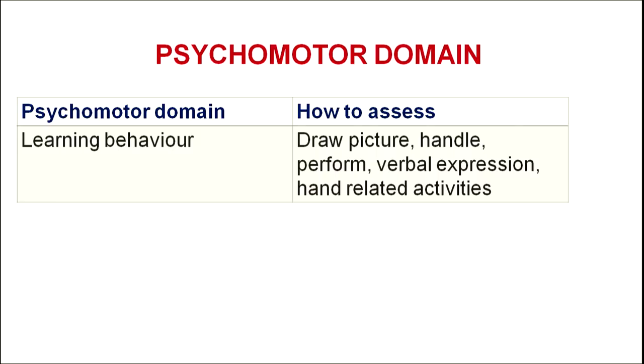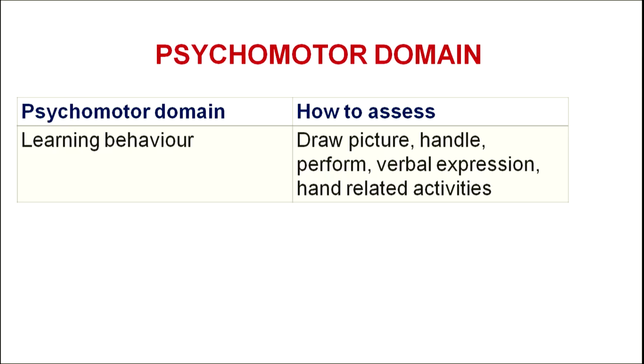The third level of learning objectives is the psychomotor domain, which involves manipulative activities like drawing pictures, handling and manipulating activities through experiments, verbal expression, and hand-related activities. These are parameters through which psychomotor learning objectives can be assessed.